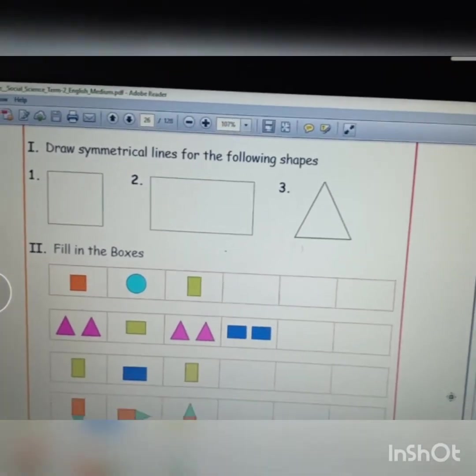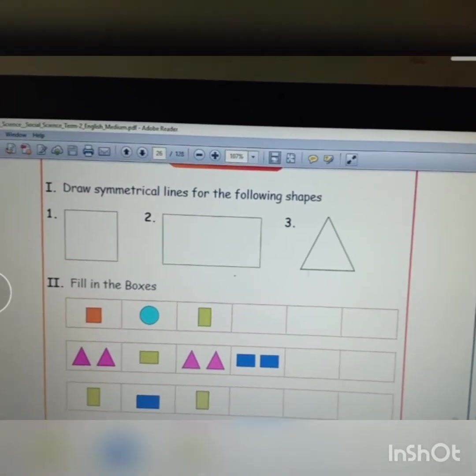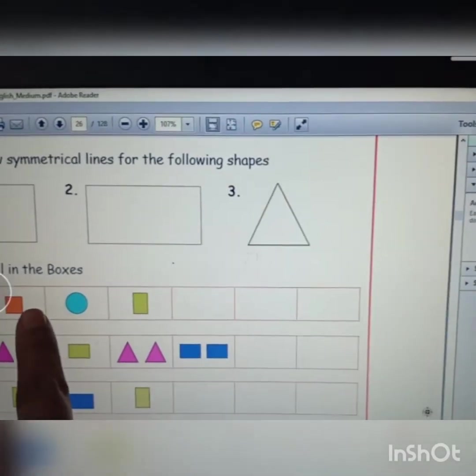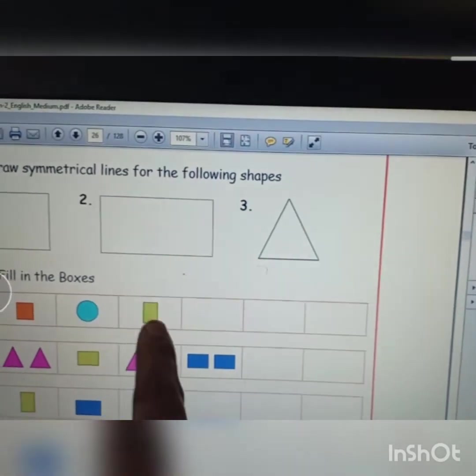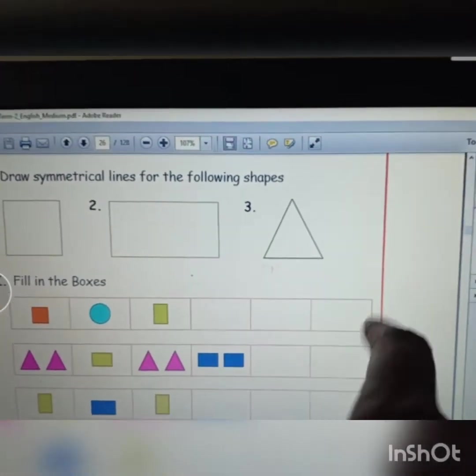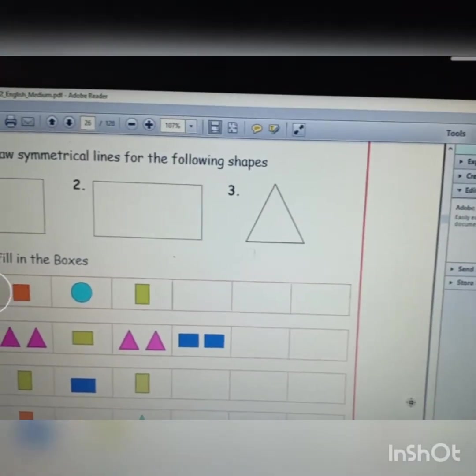Fill in the boxes. These are actually patterns. You can draw the next box. First square, circle, rectangle. Next, you have to draw the square, circle, rectangle. Like that pattern you should write.